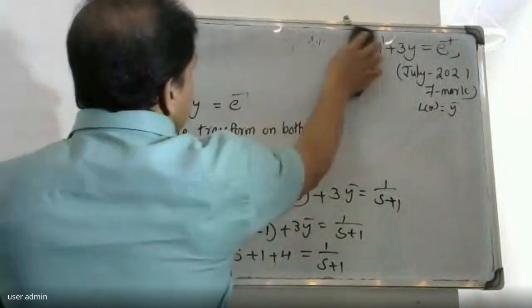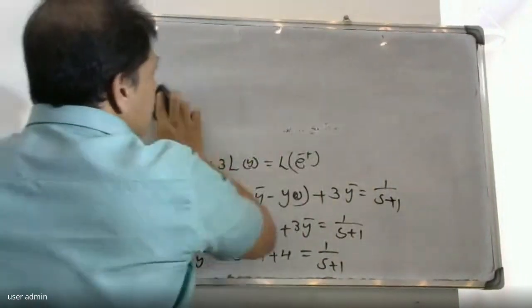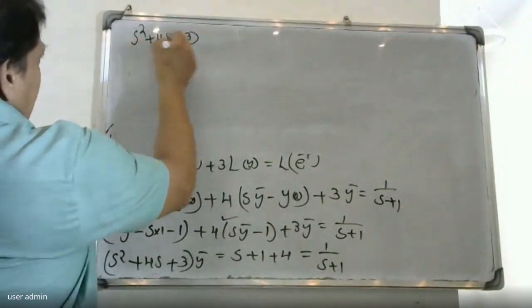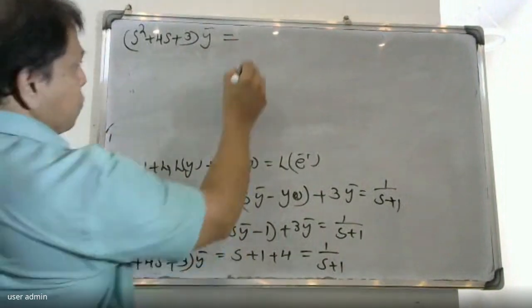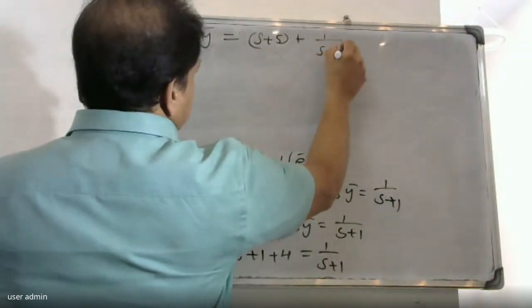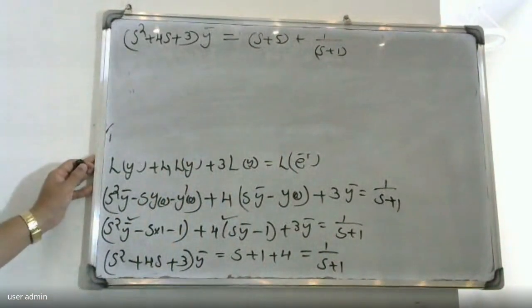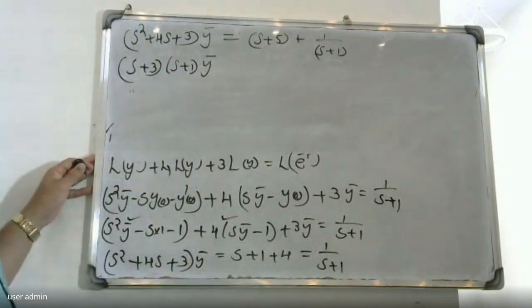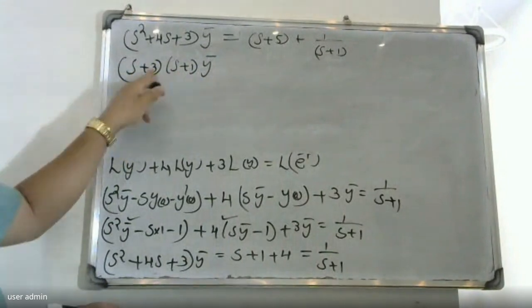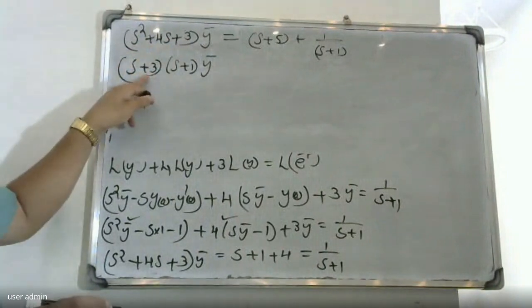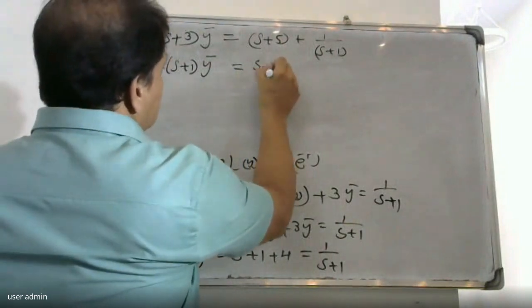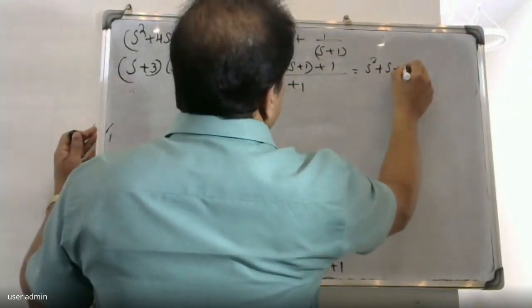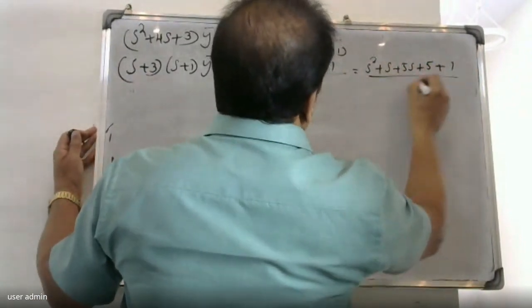That gives us (s² + 4s + 3)·ȳ = s + 5 + 1/(s+1). Multiplying through by (s+1): (s² + 4s + 3)(s+1)·ȳ = (s+5)(s+1) + 1, which equals s² + 6s + 6.